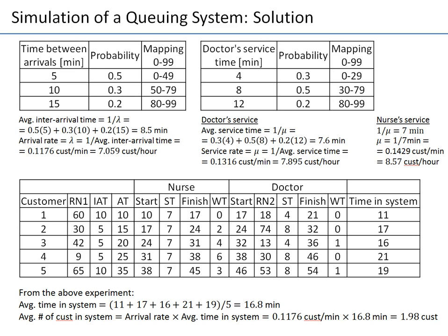In the previous video I showed you how to simulate a queuing system with one doctor and one nurse — two servers sequentially serving a stream of customers. We did this manually and had to do a lot of work to simulate just five patients' arrivals and services. This is very time-consuming. In practice, we need to simulate many more customers and repeat the experiment a large number of times to get good estimates for parameters like average time in system. Just one experiment with five patients is not enough.